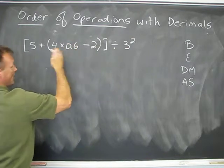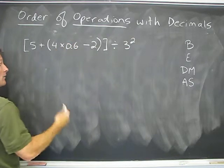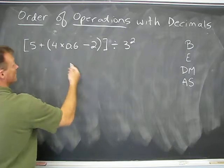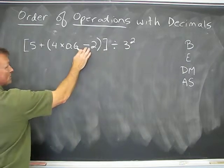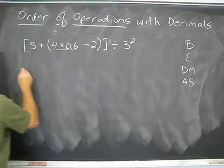So we have to start inside of the bracket and now we go through the list. Inside of the brackets, what are the operations? There's multiplication and subtraction. You're going to do the multiplication first.